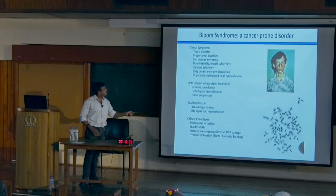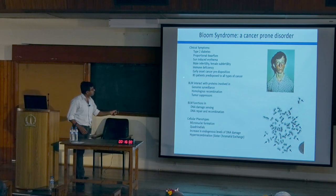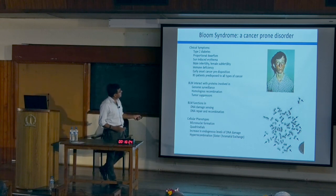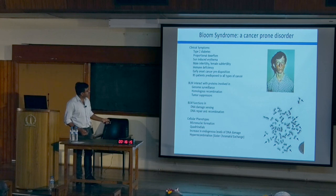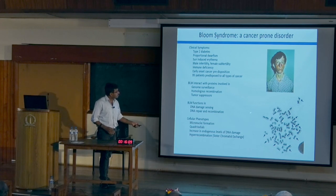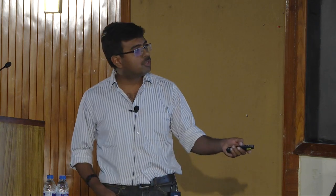Bloom syndrome is a cancer-prone disorder with different clinical symptoms including diabetes, fertility problems, and immune deficiency. A key finding summarized from the work of many labs is that BLM is involved in genome surveillance, homologous recombination, and DNA damage sensing. Even today the gold standard diagnostic for Bloom syndrome is a huge increase in the rate of sister chromatid exchanges — normally one or two, but in Bloom syndrome patients it rises to 40 or 50.